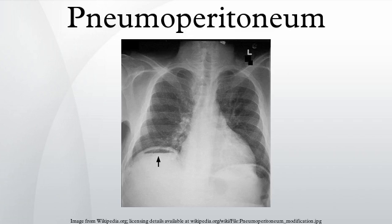Pneumoperitoneum is the presence of air or gas in the abdominal cavity. It is often seen on X-ray, but small amounts are often missed, and CT is nowadays regarded as a criterion standard in the assessment of a pneumoperitoneum. CT can visualize quantities as small as 5 cubic centimeters of air or gas.